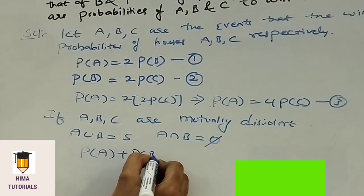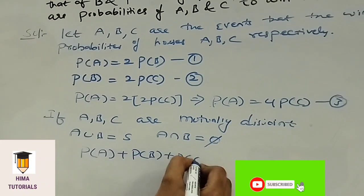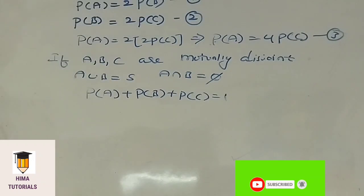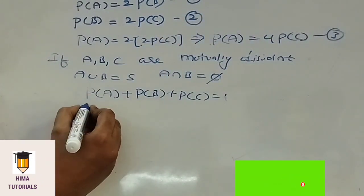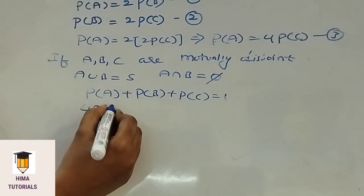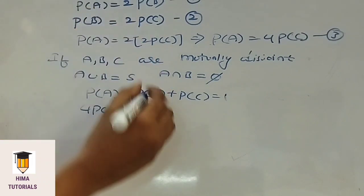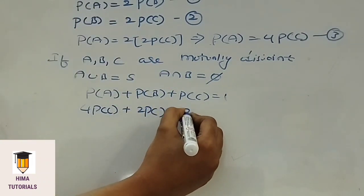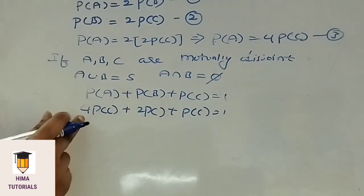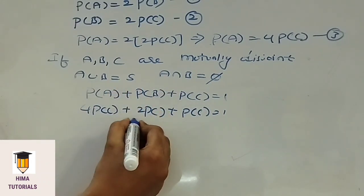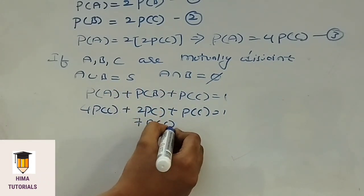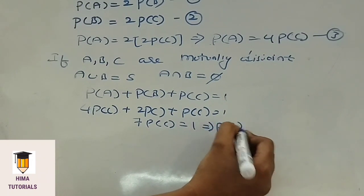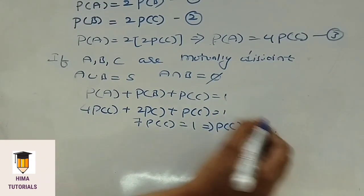That means P of A plus P of B plus P of C is equal to 1. Here, P of A is 4P of C, and P of B is 2P of C. Written as 4P(C) plus 2P(C) plus P(C) equals 1. So 7 times P of C equals 1, which implies P of C is equal to 1 by 7.